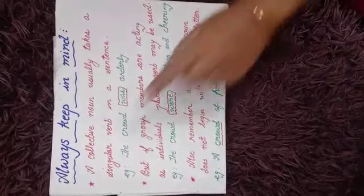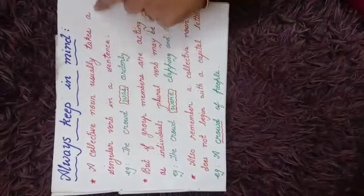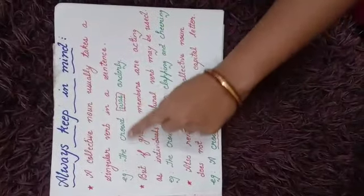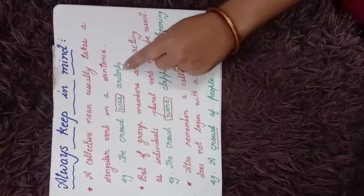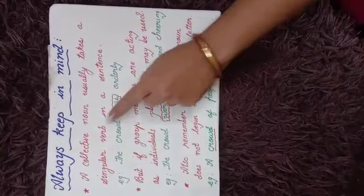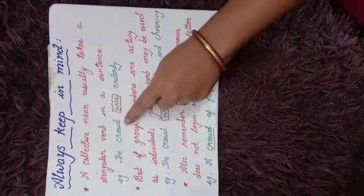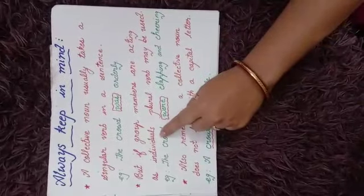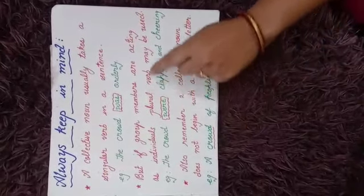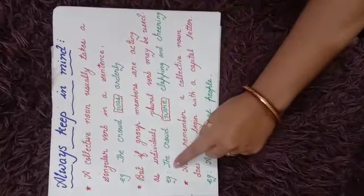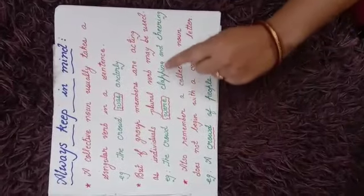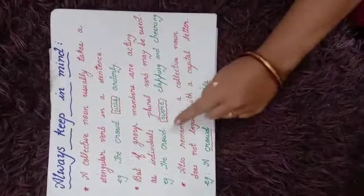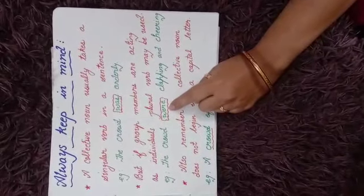Always keep in mind, a collective noun usually takes a singular verb in a sentence. For example, 'the crowd was orderly.' Here 'was' is a singular verb used for crowd. But if group members are acting as individuals, a plural verb may be used. For example, 'the crowd were clapping and cheering.' The same word crowd, but now the verb has changed to plural.